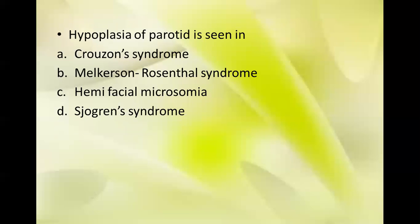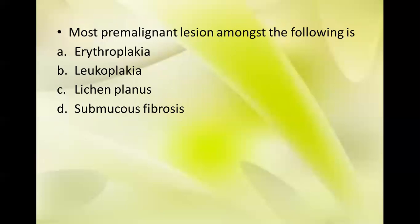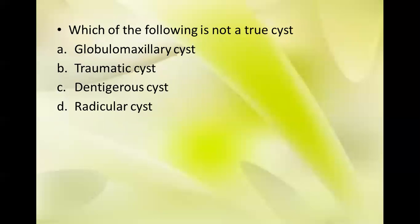Next question: hypoplasia of the parotid is seen in which condition? Options: Crouzon syndrome, Melkersson-Rosenthal syndrome, hemifacial microsomia, Sjögren syndrome. The answer is C, hemifacial microsomia. The most pre-malignant lesion among the following: erythroplakia, leukoplakia, lichen planus, and submucous fibrosis. The answer is A, erythroplakia.